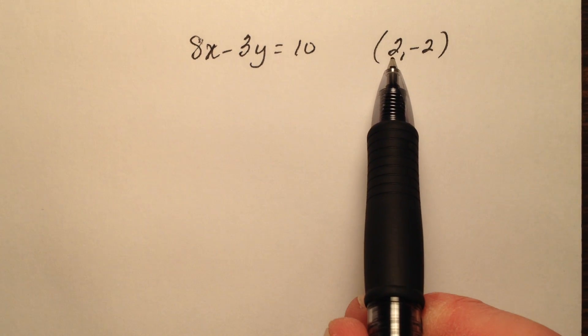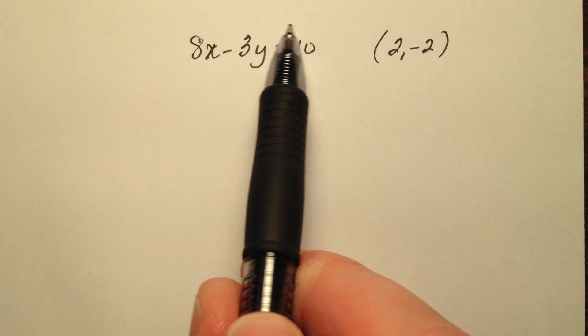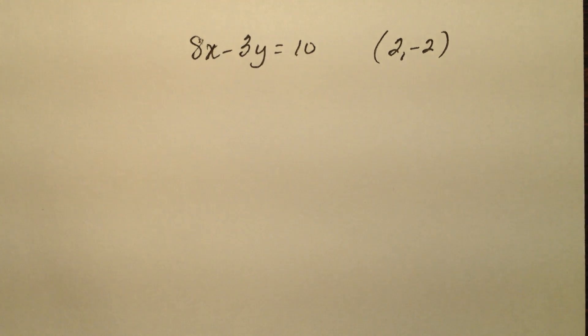In this example, we're going to determine whether or not the ordered pair (2, -2) is a solution of this linear equation in two variables, 8x minus 3y equals 10.